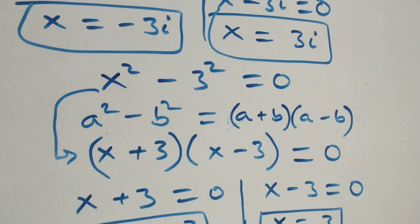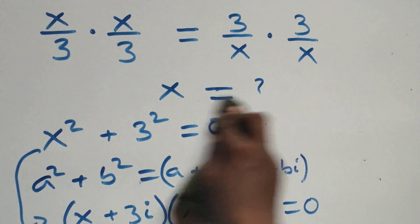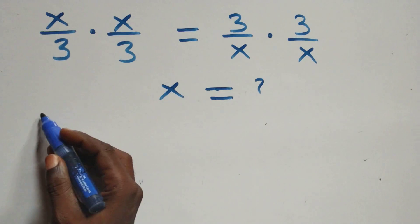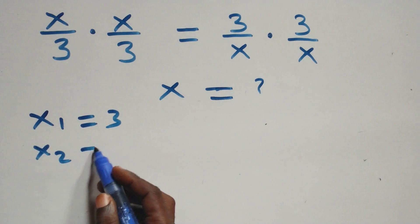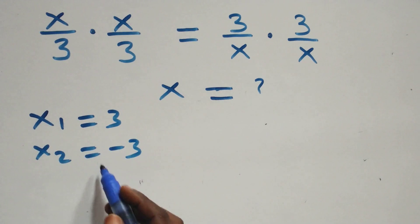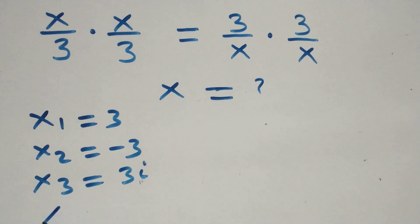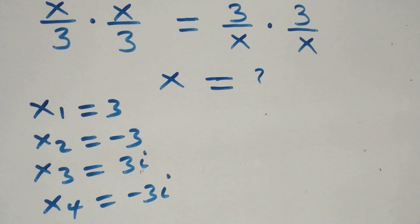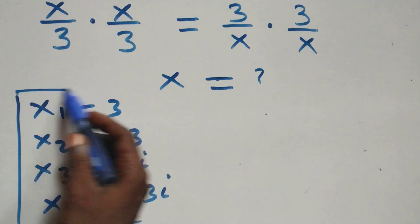Writing out all solutions: x₁ equals 3, x₂ equals −3, which are the two real solutions; x₃ equals 3i and x₄ equals −3i, which are the two complex solutions. Altogether, we have four solutions.